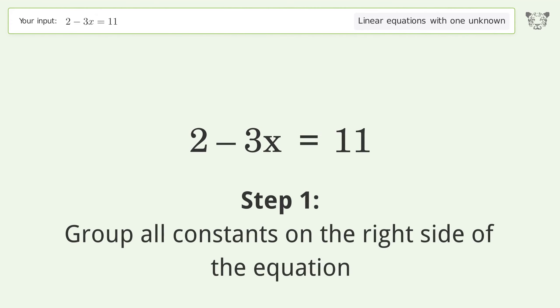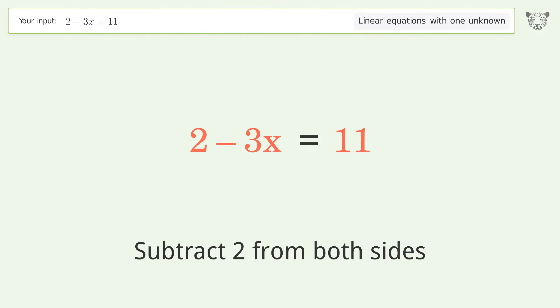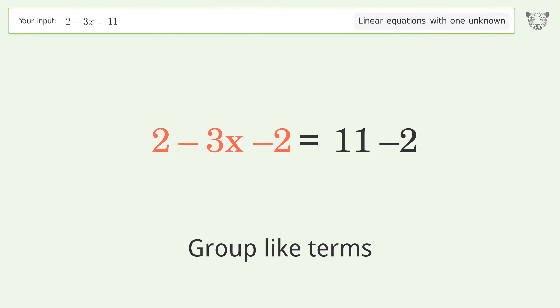Group all constants on the right side of the equation. Subtract 2 from both sides. Group like terms. Simplify the arithmetic.